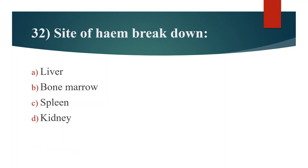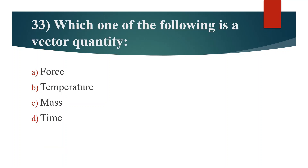Thirty-second question. Site of heme breakdown. Option A: Liver. Option B: Bone marrow. Option C: Spleen. Option D: Kidney. Answer is Option D: Kidney.